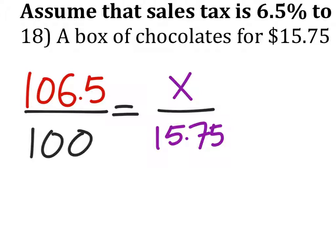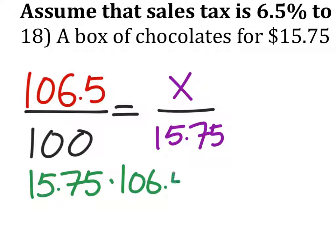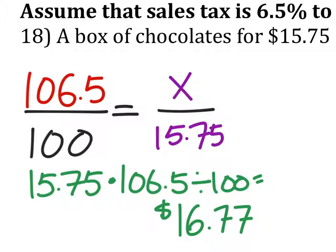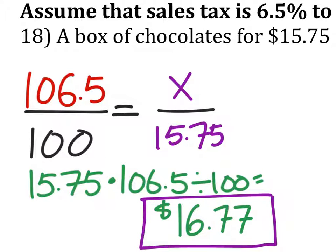Alright, so from here we're just going to work this out. Fishing method, bow tie, cross multiplication — it's all the same. So, 15.75 times 106.5, and divide it by 100, and I get $16.77. That is the price after the tax.